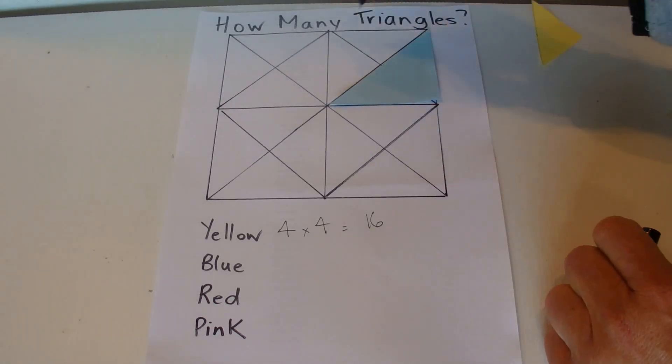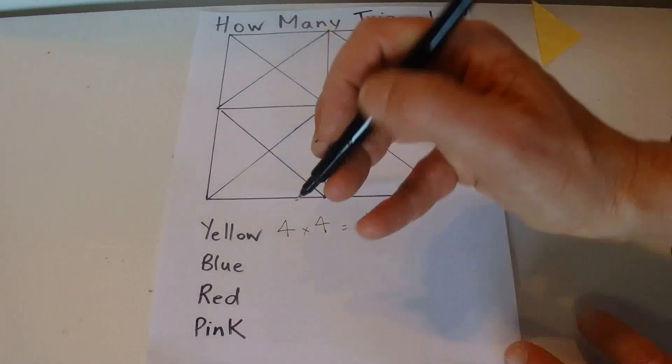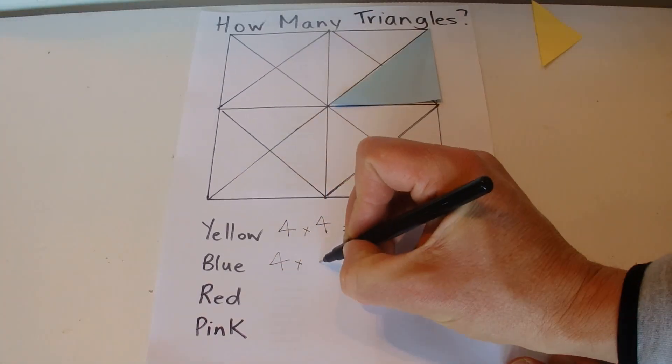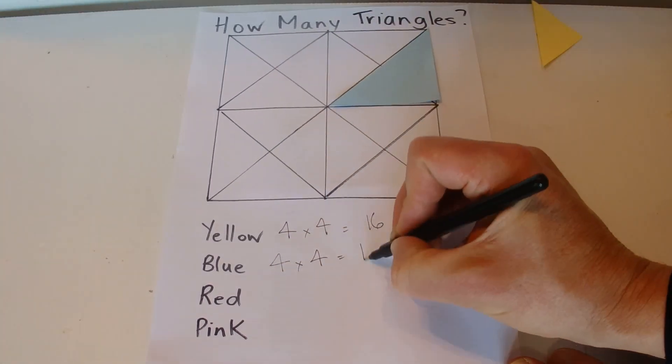And there's four boxes in the grid, so four times four equals sixteen. So there's sixteen of those blue medium-sized triangles.